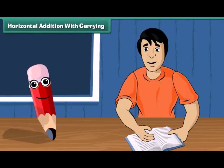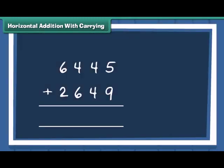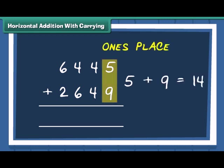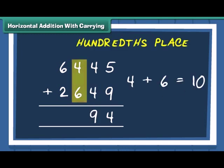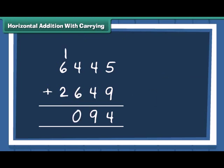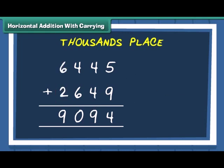Let us practice one more example with a bit of a twist. We have 2 numbers, 6445 and 2649. Add the numbers at 1's place. Now carry 1 to the 10's place. Add the 10's. Then add the numbers at 100's place. We have 1 number carried on to 1000's place. Add 1000's to make the final answer.